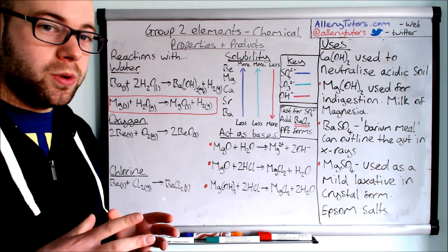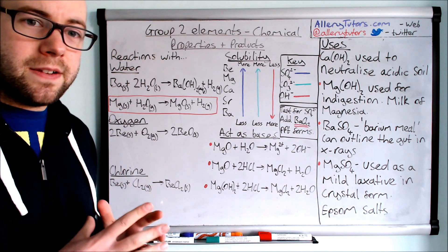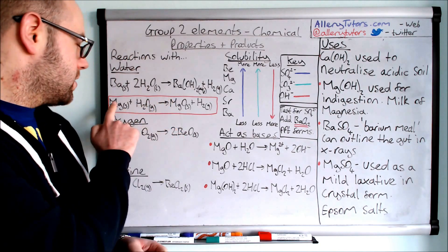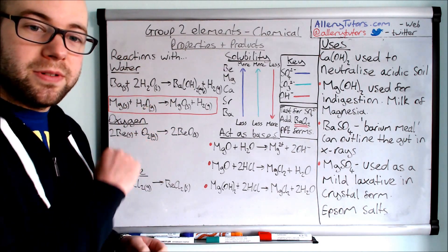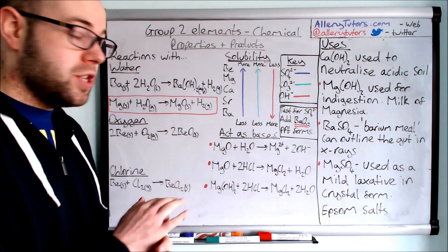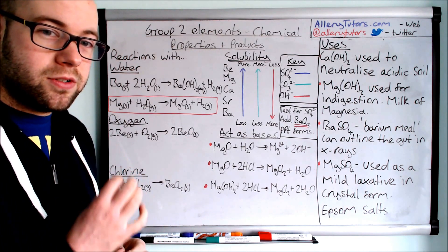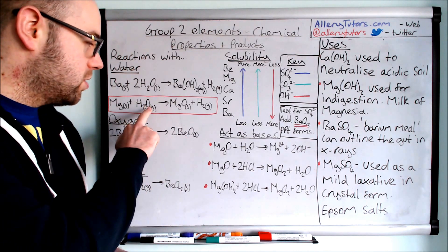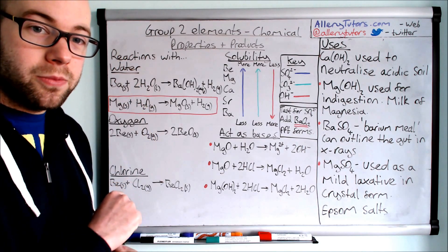However, if we take the water and boil it — turn it to steam — we get a different product. We actually get an oxide instead of a hydroxide. So we take solid magnesium and react it with water(g) — the G showing it's steam — and we do produce hydrogen, but we produce an oxide. Make sure you don't forget that. Look carefully at your state symbols: is the water steam or is it a liquid?